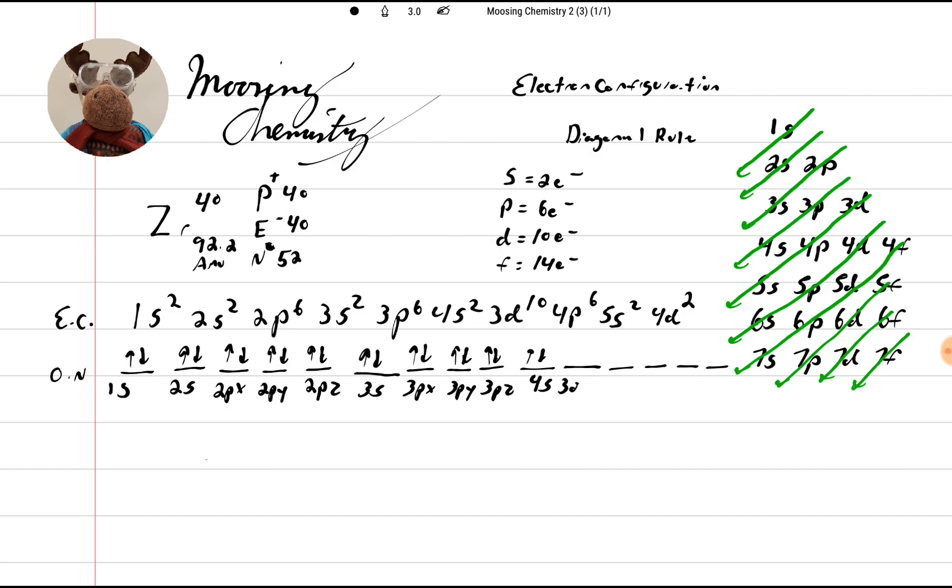So this is 3dx squared minus y squared, 3dxy, 3dyz, 3dxz, and 3dz squared. And we have 10 electrons. So we've got 1, 2, 3, 4, 5, 6, 7, 8, 9, and 10.